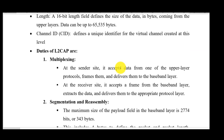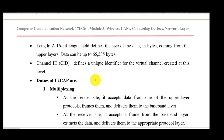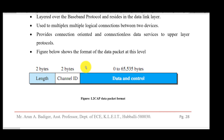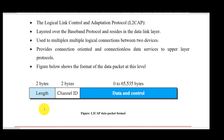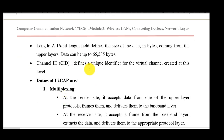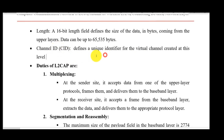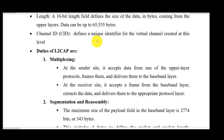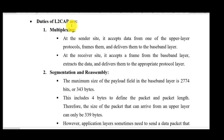L2CAP supports multiplexing. The data packet format has 2 bytes of length, 2 bytes of channel ID, and up to 65,535 bytes of data and control. The length field indicates the complete frame length; the channel ID indicates which virtual channel is being used; and the data field can carry either data or control signals. The 16-bit length allows 2^16 bytes maximum per frame.